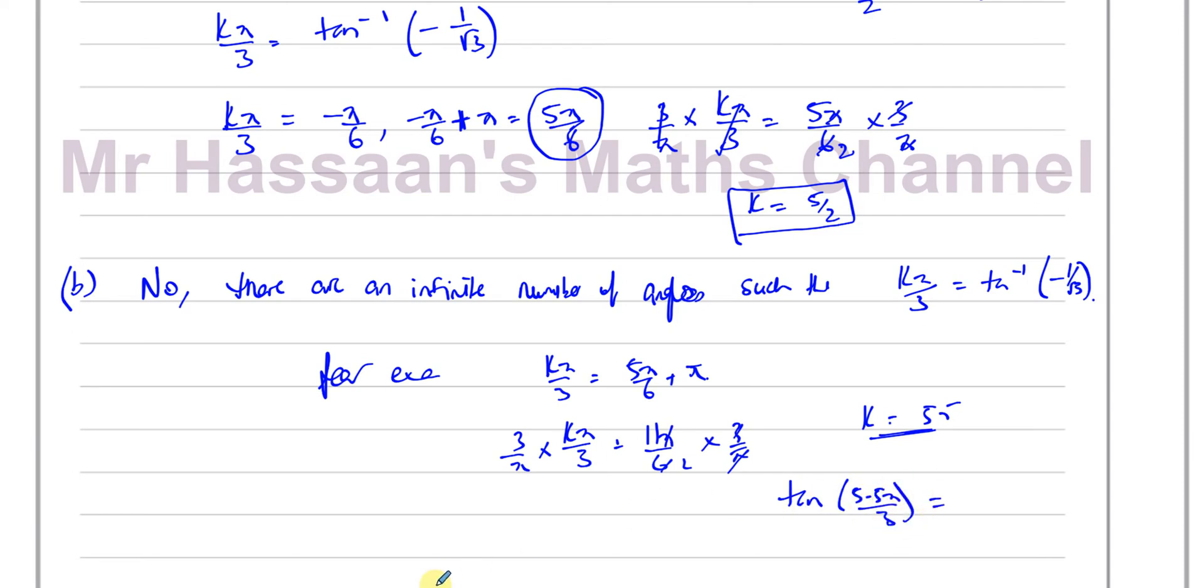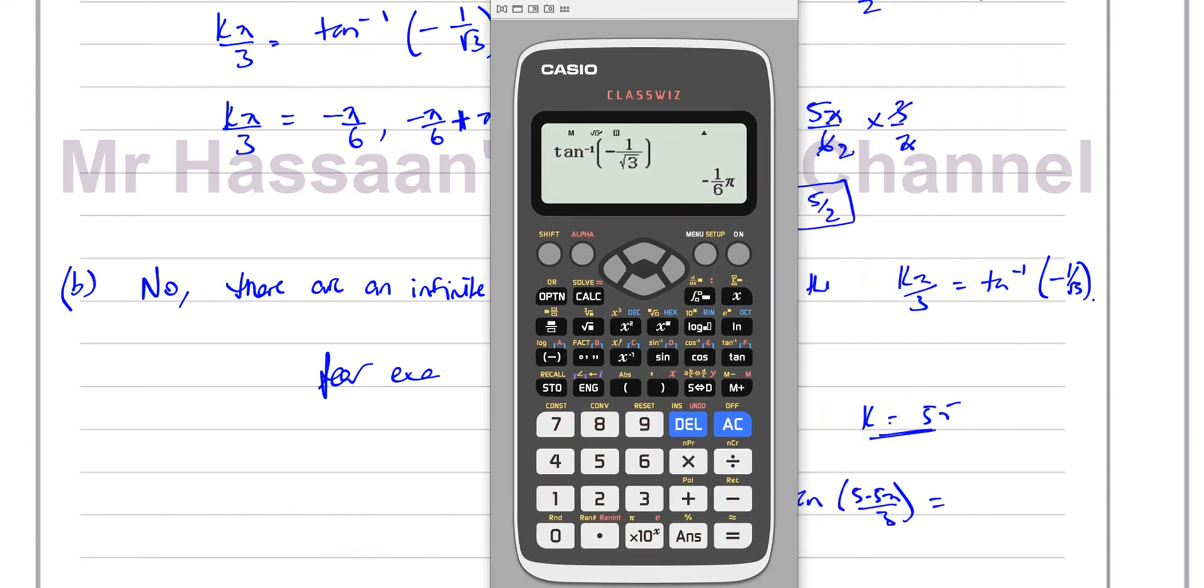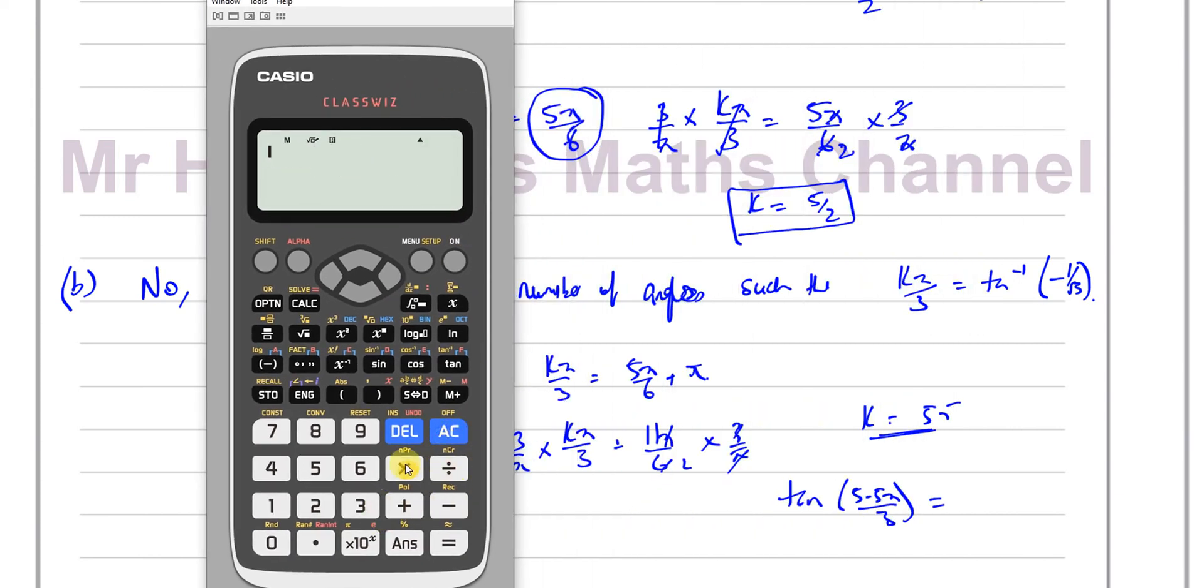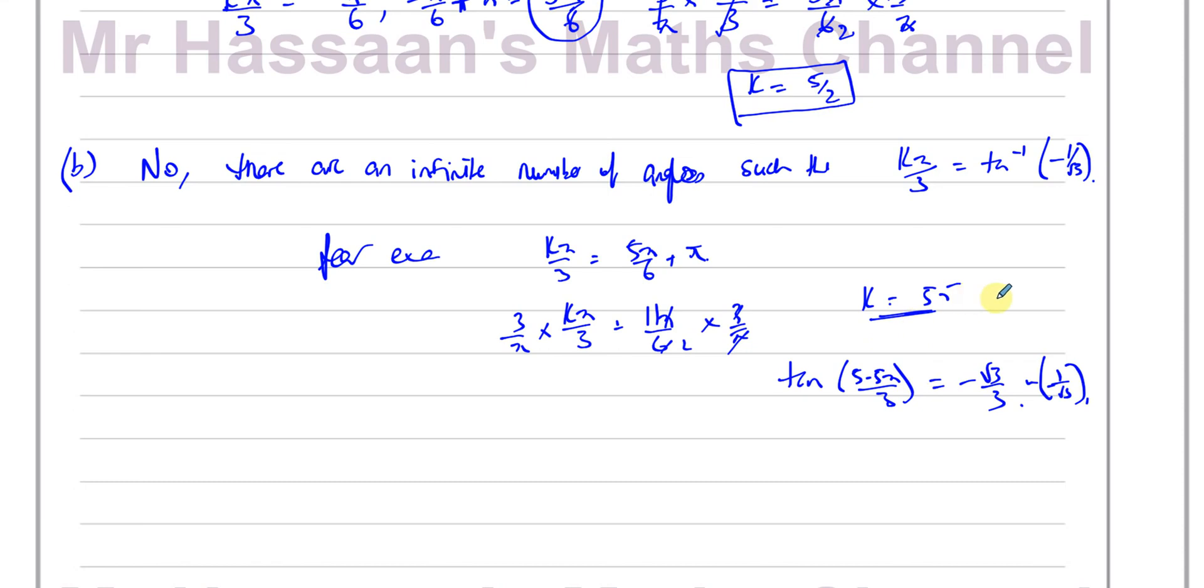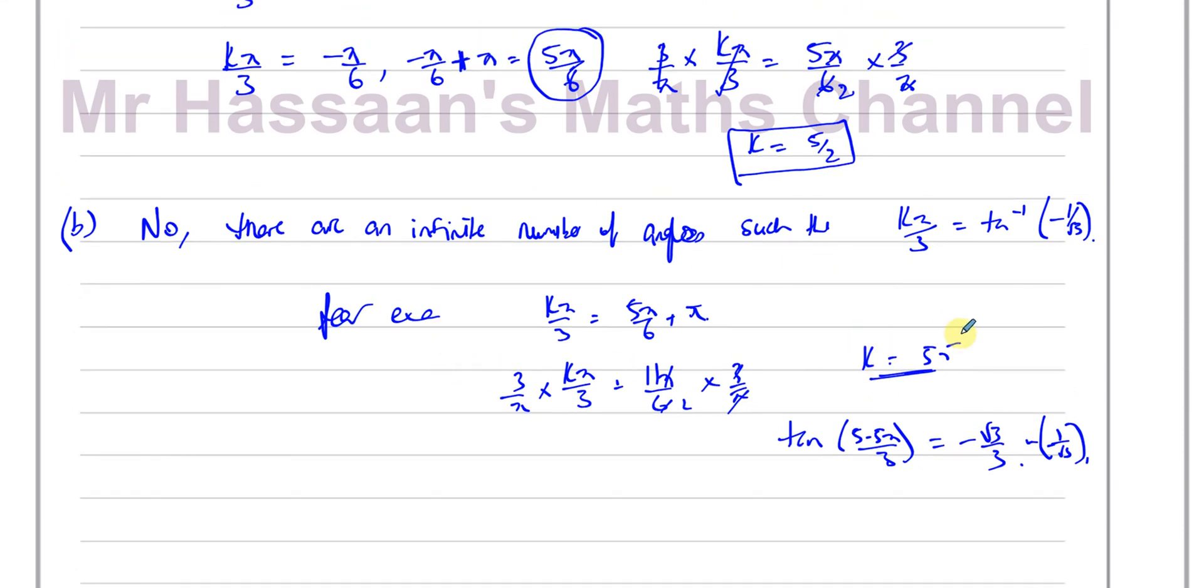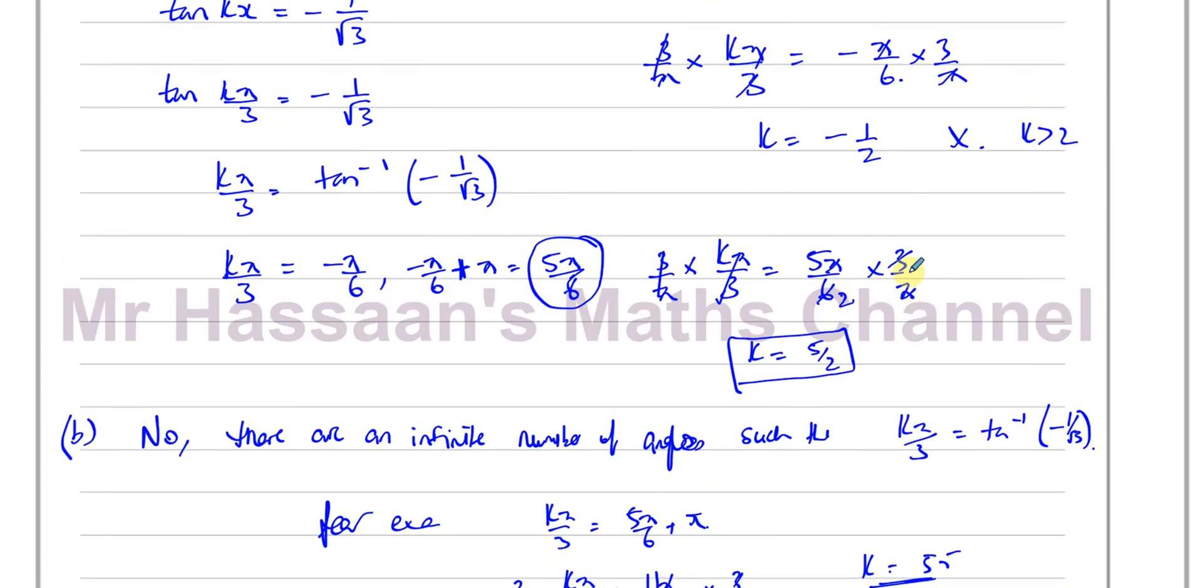Because the tan of 5.5 times π over 3, k π/3, should give us minus 1 over root 3. The calculator will give it in simplified form. So that's tan of 5.5 times π over 3. This value of k will also give us the same answer which is minus 1 over root 3. This is just simplified form, also equal to minus root 3 over 3. Therefore, we've proved that there are other values of k. There's an infinite number of values of k, in fact.